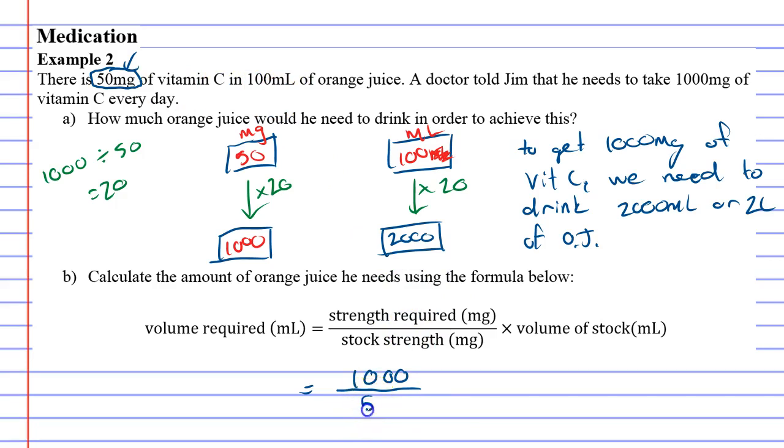Times by the volume of stock, and the volume of stock is this 100 here. When you do that, you get 2000 milliliters or two liters.